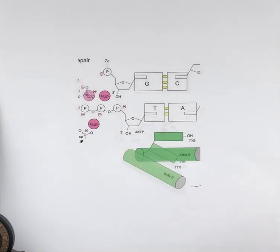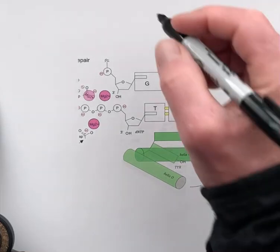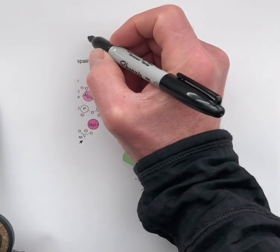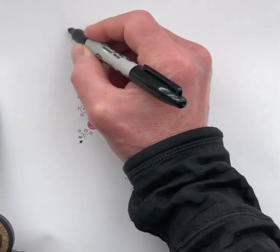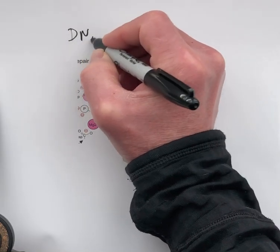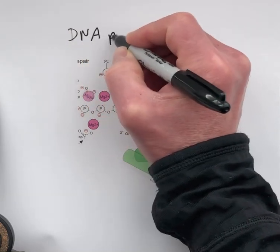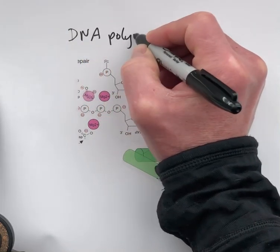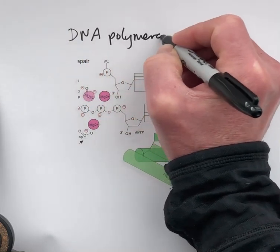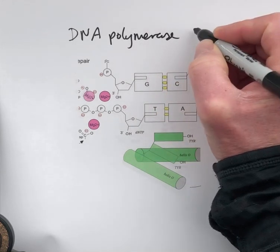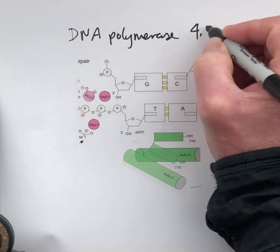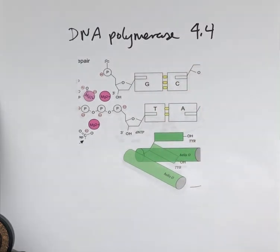In this video we're going to review the mechanism of DNA polymerase. This is topic 4.4 for exam four.